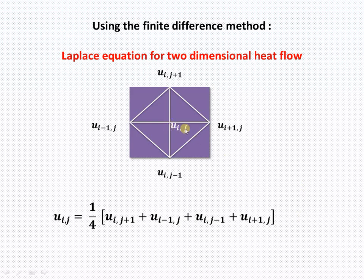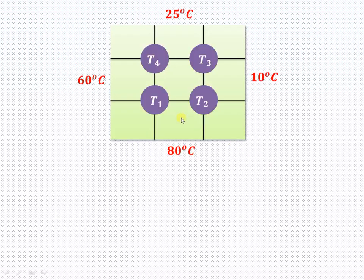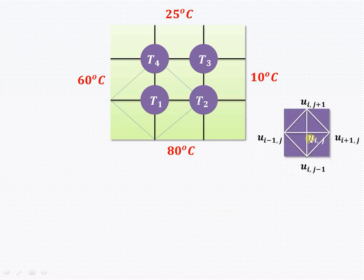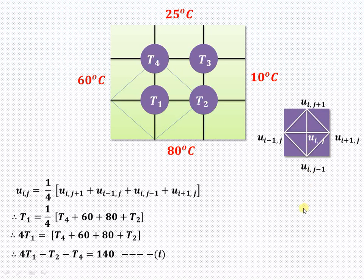According to the Laplace equation, u_ij is given by 1/4 times the summation of the four corner points of the rhombus. Specifically, it is 1/4 times (u_i,j+1 + u_i-1,j + u_i,j-1 + u_i+1,j). In our case, we form the rhombus as shown and apply this same concept to write down the equation.